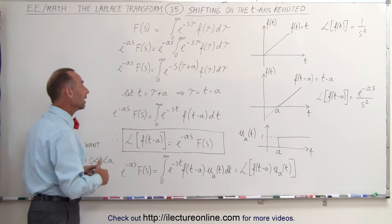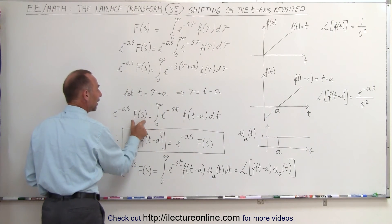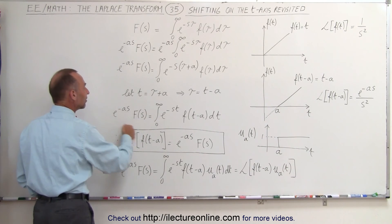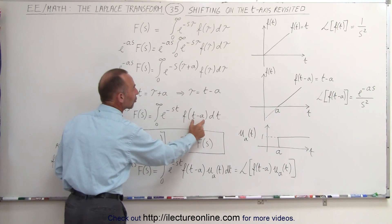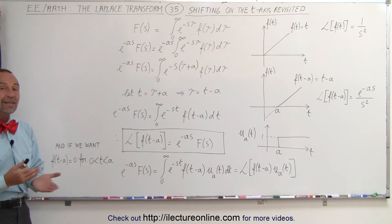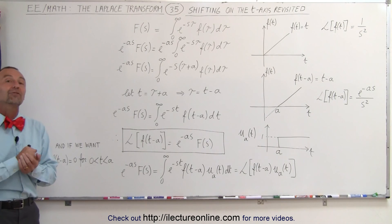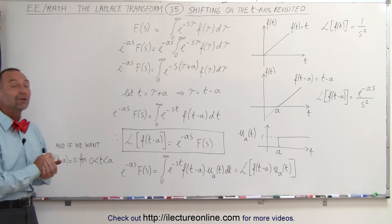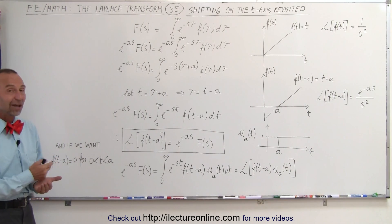So whenever we have f of t minus a and we want to get the Laplace transform, we get F of s as if the a isn't there and we add the component e to the minus as. And if we have e to the minus as in our transfer function and we want to go back to the original function in the time domain, make sure that we write t minus a everywhere we find t. That's how we deal with shifting in the time domain. In the previous video we saw how we manage shifting in the S domain — those are two things we should keep in memory because it makes it a lot easier to deal with Laplace transforms and inverse Laplace transforms.